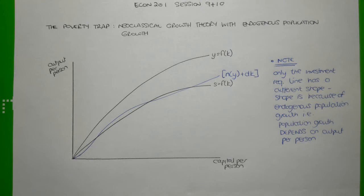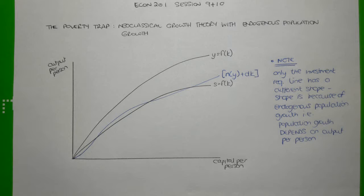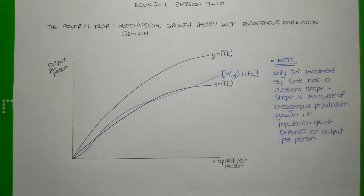Hi everyone. This is the second video related to sessions 9 and 10, and it specifically considers something called the poverty trap. The poverty trap arises under neoclassical growth theory assumptions, but when there is endogenous population growth. Just to flag, this should not be confused with endogenous growth theory. At its fundamental, this is a neoclassical growth theory model, and the only difference is that population growth is assumed to be endogenous within this model.